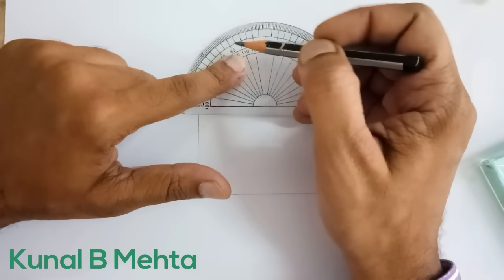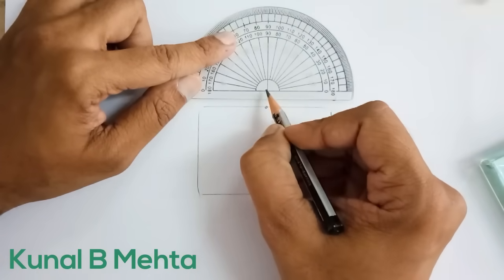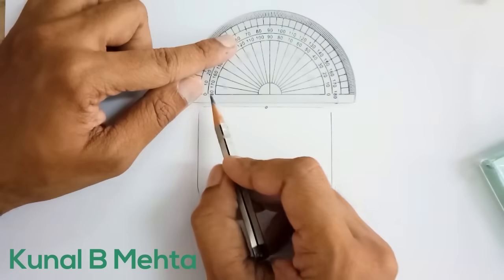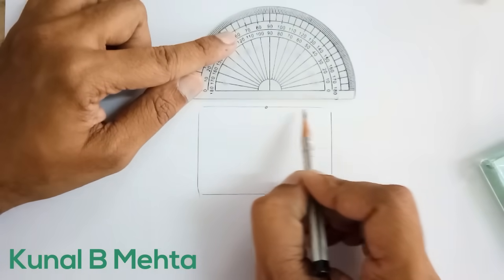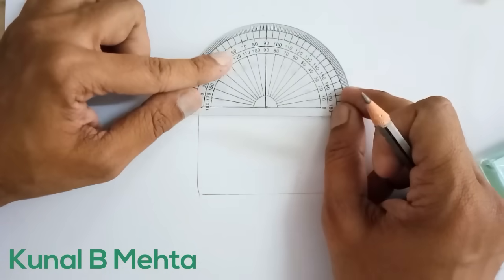So I will be marking a point here and this part of the protractor I am going to keep it over here and this line should be coinciding with the outline of the glass slab like this.